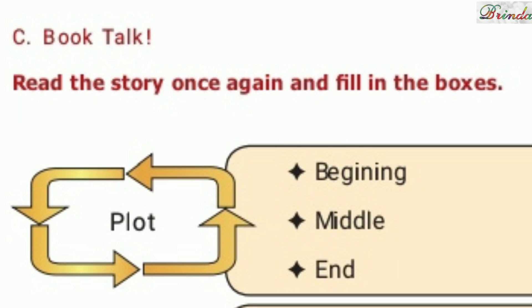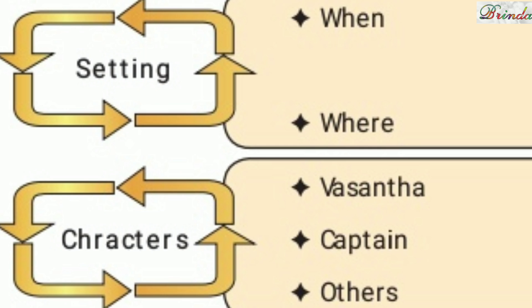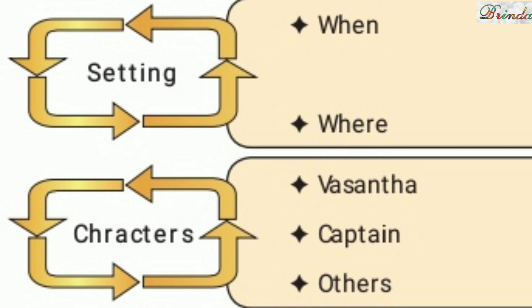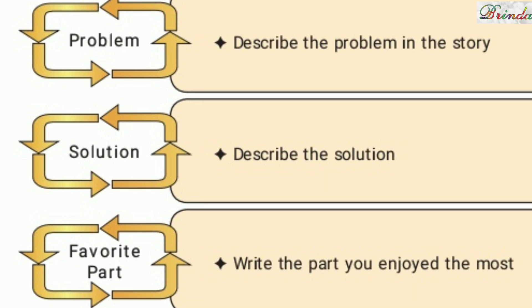Shall we do book talk first? Read the story once again and fill in the boxes. You can listen to the guided reading part. The boxes cover: plot — beginning, middle, end; settings — when and where it was set; characters — Basantha, Captain and others; problem — what was the problem in Man Overboard; solution — describe the solution; and favorite part — which part did you like. Tamil and English explanation is given in the explanation part.